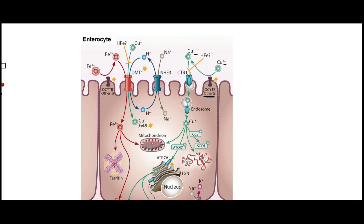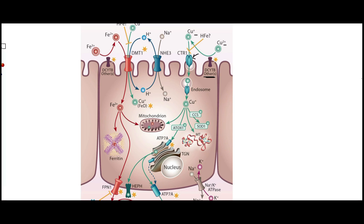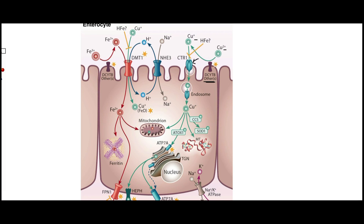The copper 1+ is then brought into endosomes by binding to CTR1, which is the main protein we're going to be looking at here, since we already looked at DMT-1 in the iron absorption video. This binding causes CTR1 to fold in and form these endosomes.